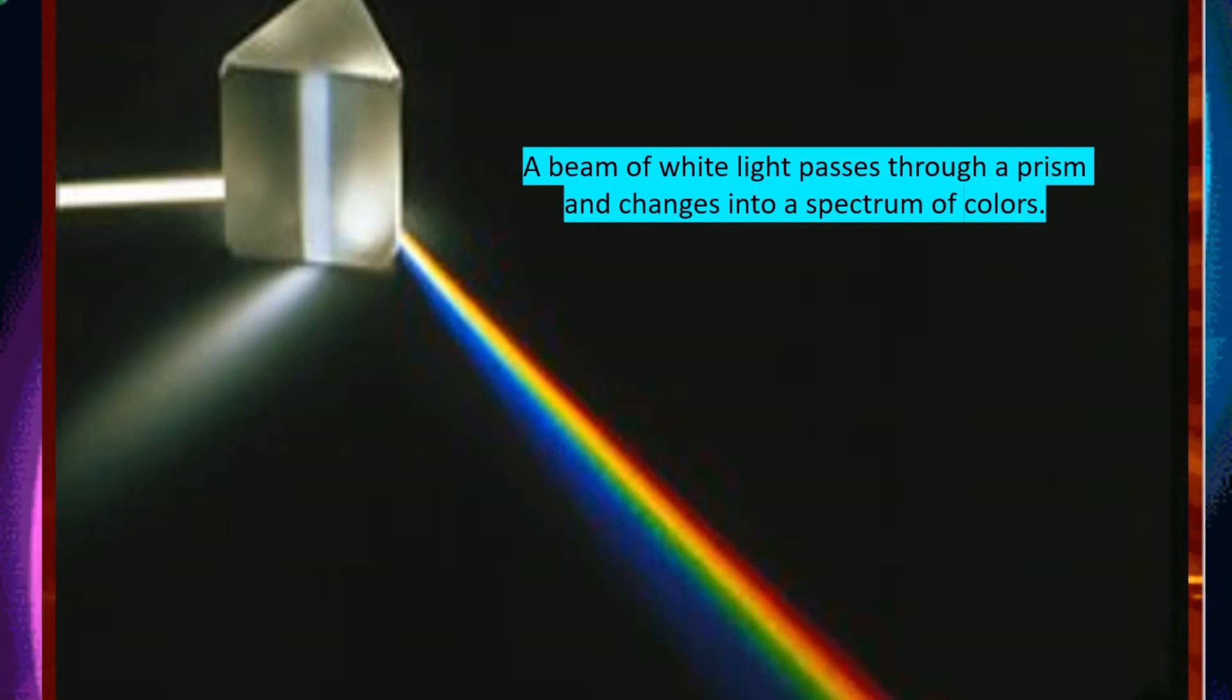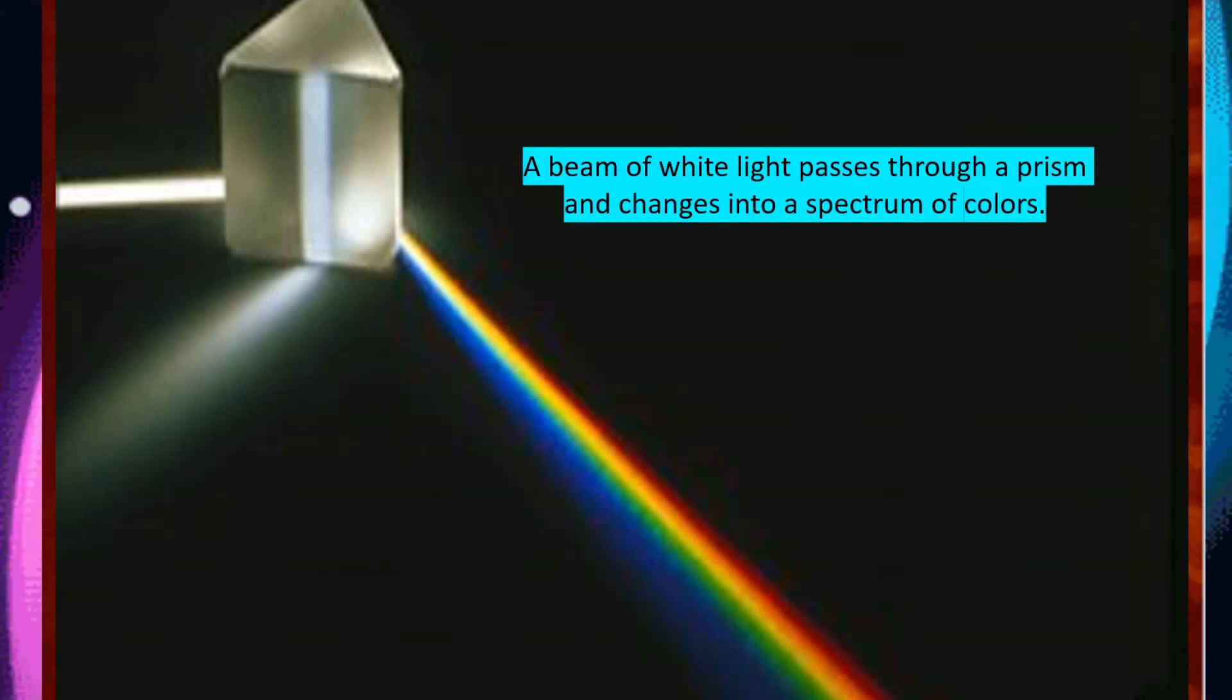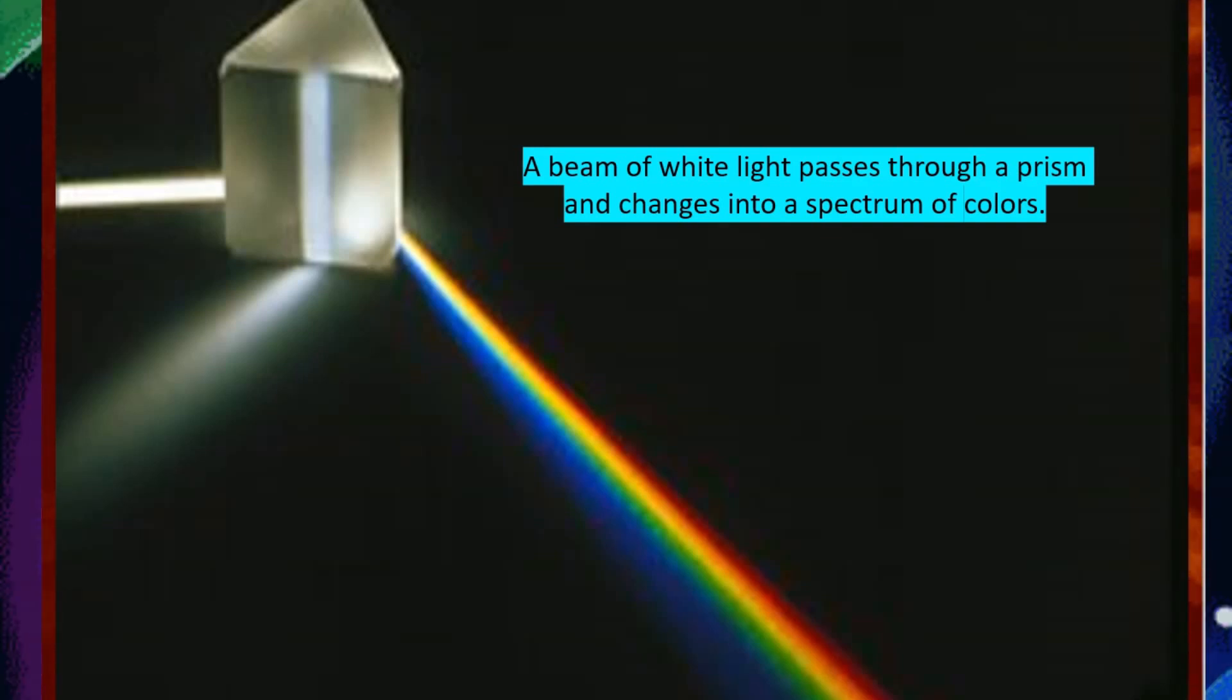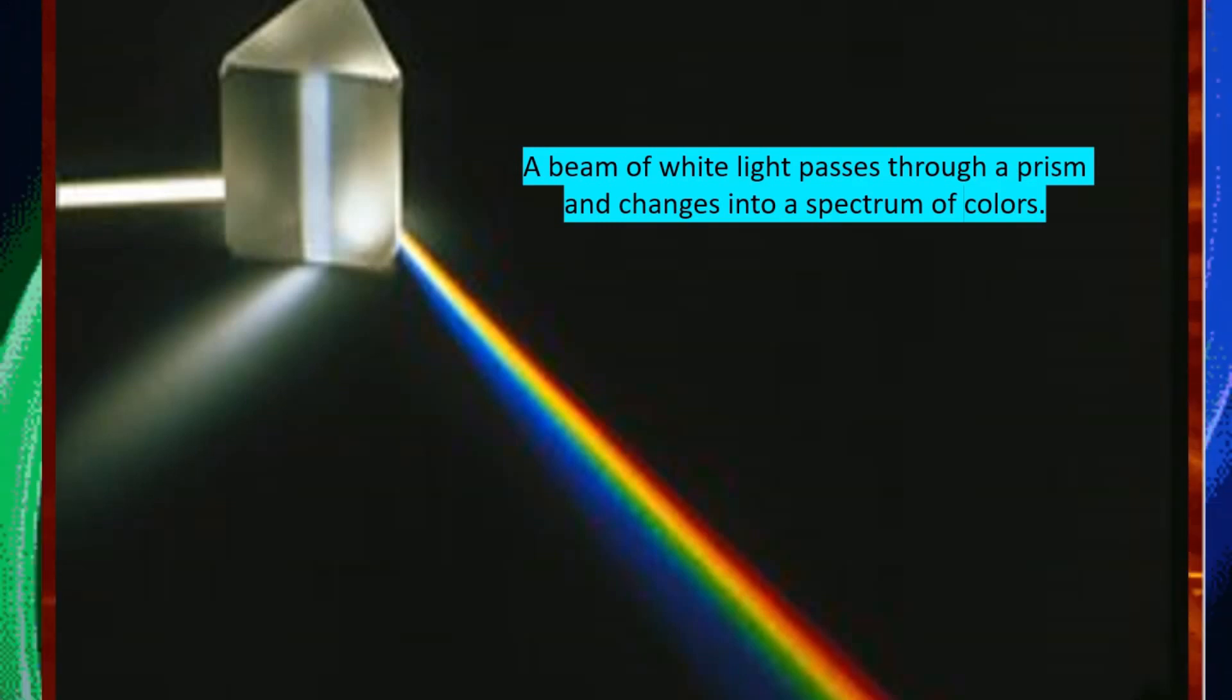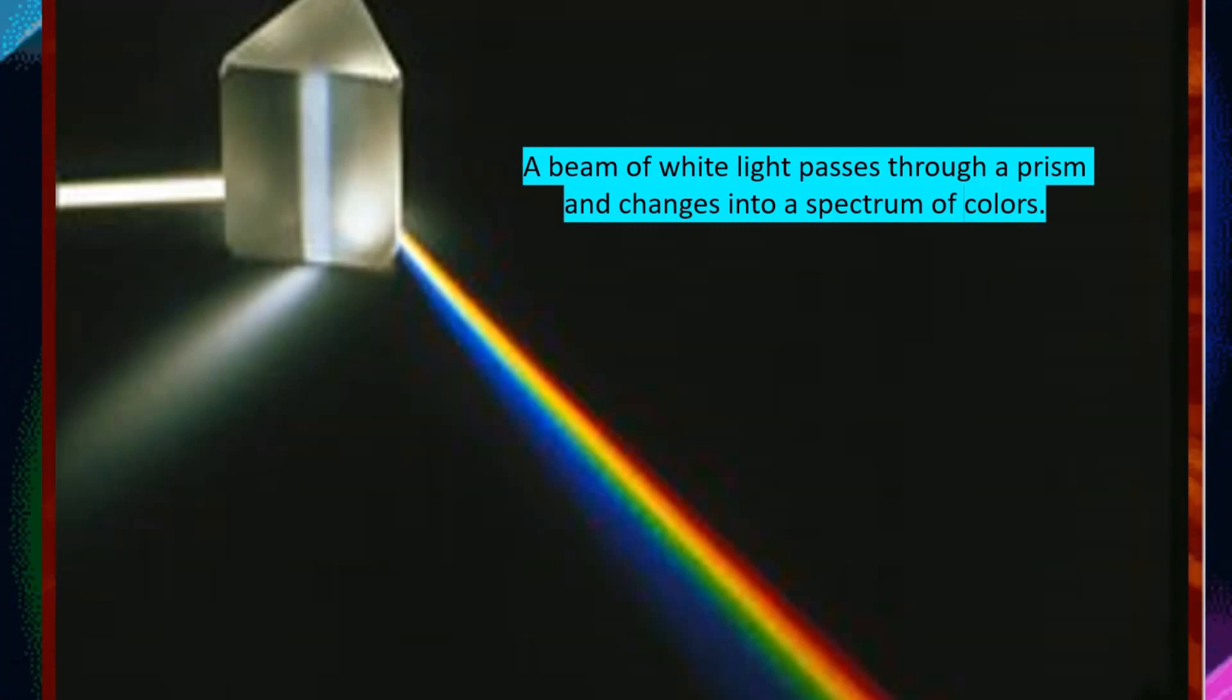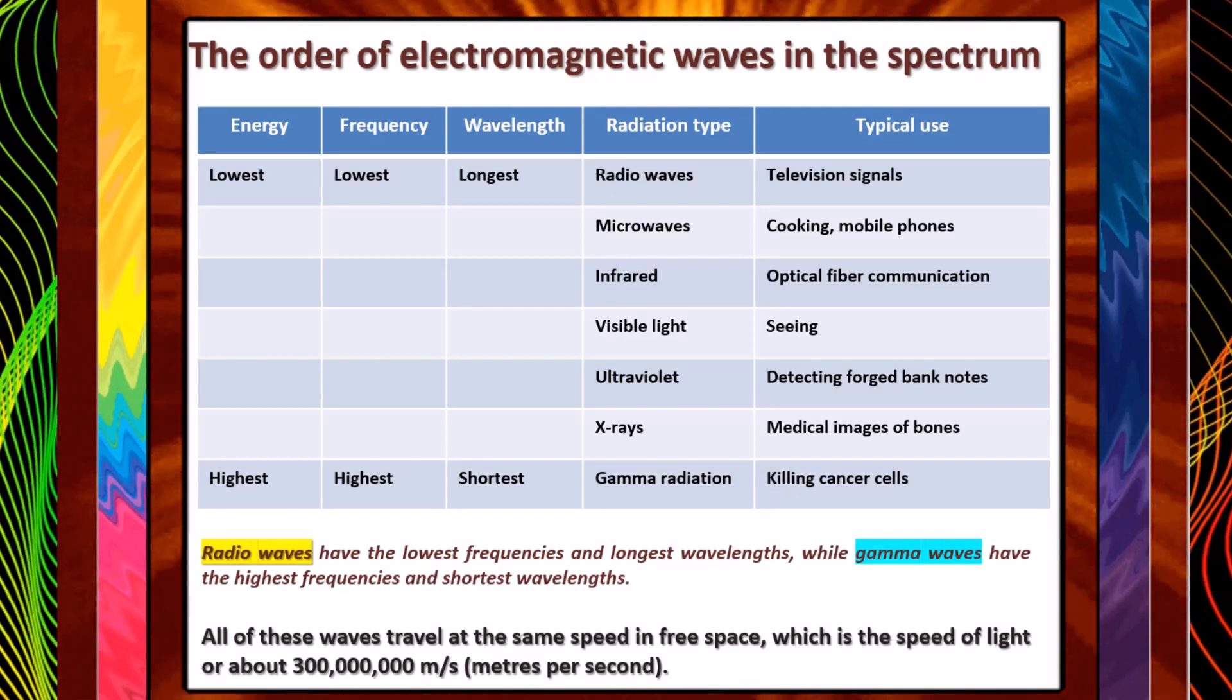Electromagnetic radiation can be useful as well as hazardous. White light can be split up to form a spectrum using a prism. This is a block of glass with a triangular cross section. The light waves are refracted as they enter and leave the prism. The shorter the wavelength of the light, the more it is refracted. As a result, red light is refracted the least and violet light is refracted the most, causing the colored light to spread out to form a spectrum. This is called dispersion.